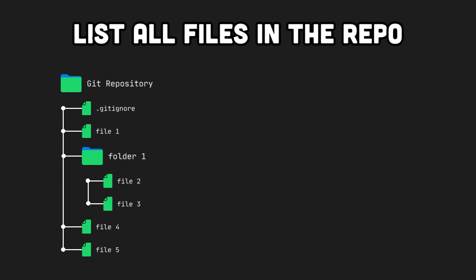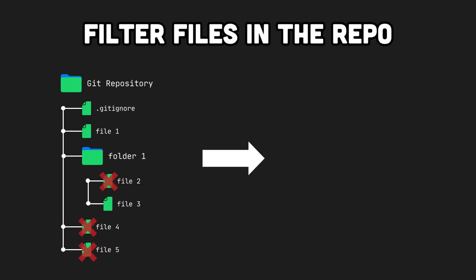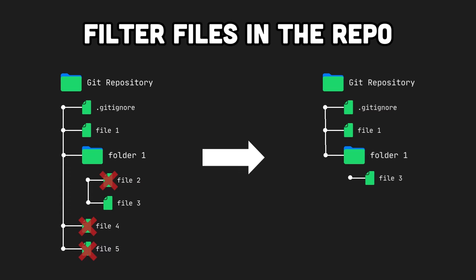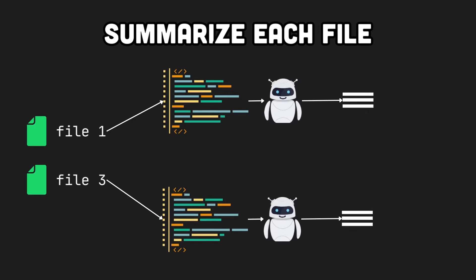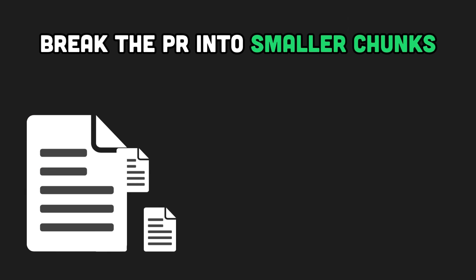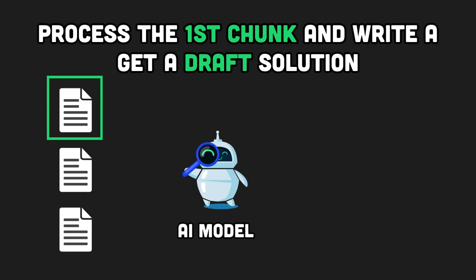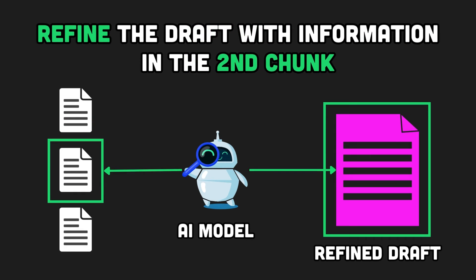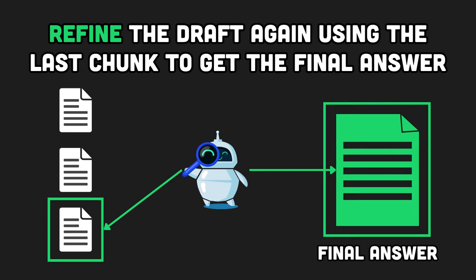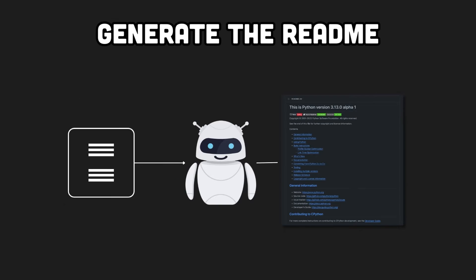Okay, so we have a plan. First, we list all files in the repository and exclude the patterns from the gitignore. Then we generate a summary for each file — ideally this step runs in parallel to make it faster. At this stage, if the file is small enough to fit into the context, we just send it to the AI to get the summary. If the file is too big, we break it down into smaller chunks and use prompt chaining — either MapReduce or Refine — to summarize it. Finally, we aggregate all the summaries into one text prompt and generate the README file. And that's the solution I finally implemented.